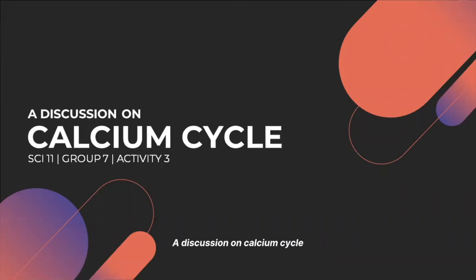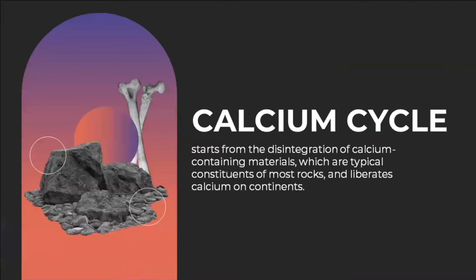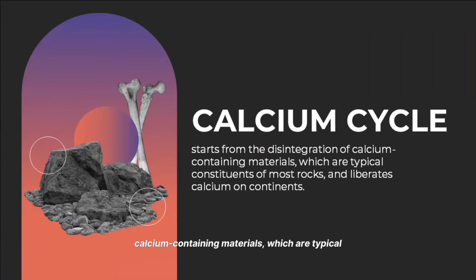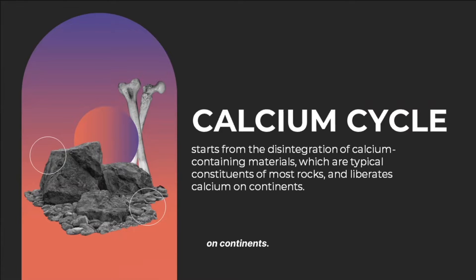A discussion on the calcium cycle. The calcium cycle starts from the disintegration of calcium-containing materials, which are typical constituents of most rocks, and liberates calcium on continents.